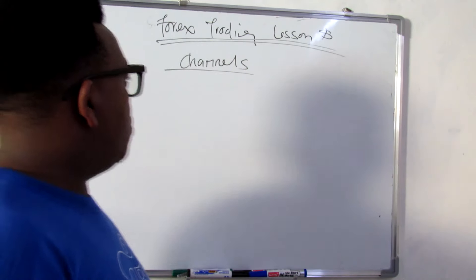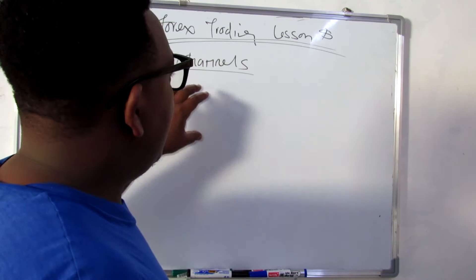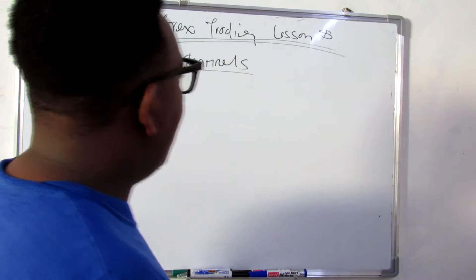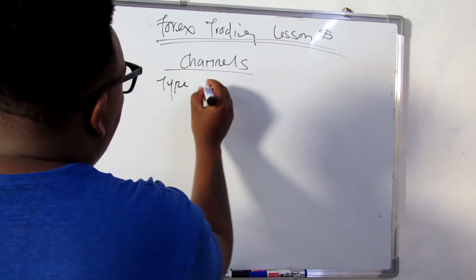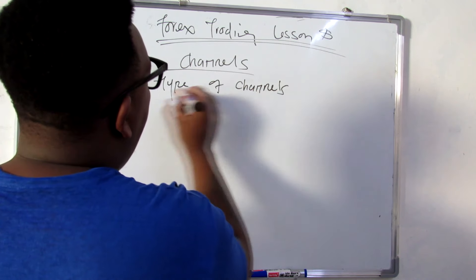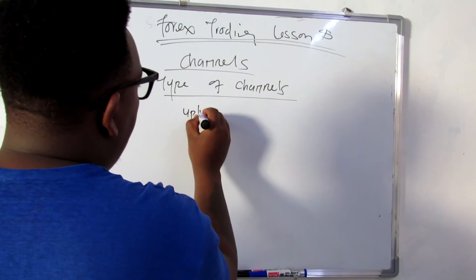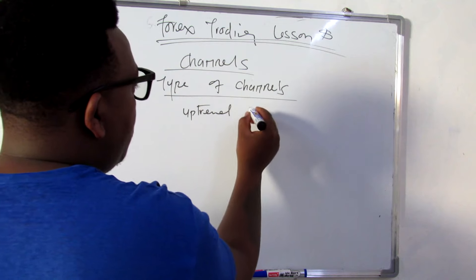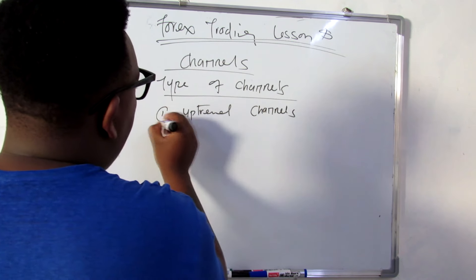So back to today's concept. Basically, channels is a more advanced concept which gets to combine trend lines. We have different types — let me start by introducing the types of channels. The same case as with trend lines, we talked of uptrend trend lines, and for this case we also have uptrend channels. That's number one.